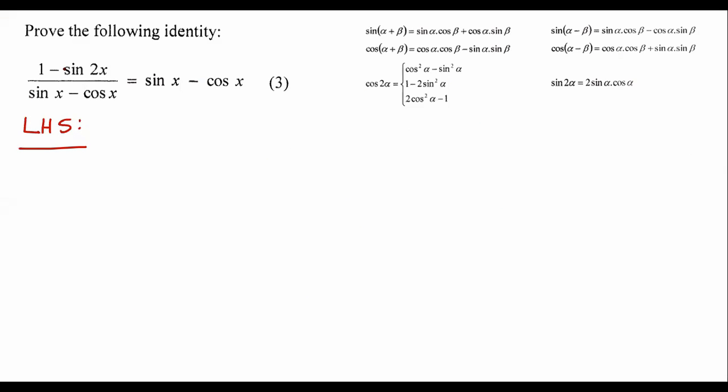This is actually quite an interesting one. What I normally tell learners to do is whenever they get a sin 2x, you should always expand it using this over here. So that would give us 1 minus 2 sin x cos x. Then at the bottom there's nothing we can really do.